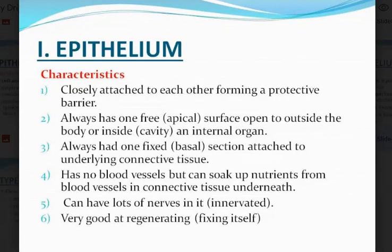So you have an apical surface that's open to the surface or the inside of a body cavity, and the base that sits on the connective tissue. Four, it has no blood vessels but can soak up nutrients from blood vessels in the connective tissue underneath it. And they can have a lot of nerves — so they are innervated. Six, they are very good at regenerating themselves.